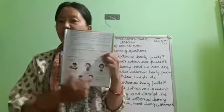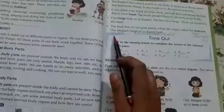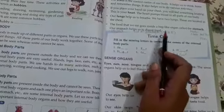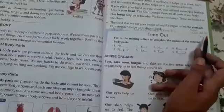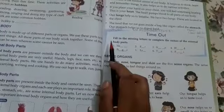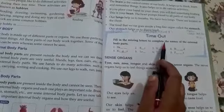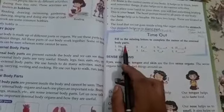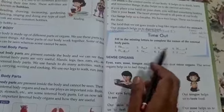Now open the EBS book at page number 11. Mention the date, then write 'First Assignment Part 2', your name, class, and section. Then write 'H.W.' Now come to the question: Fill in the missing letters to complete the names of the external body parts.